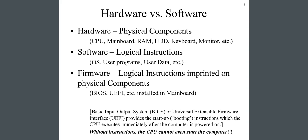Hardware versus software: hardware refers to physical components like CPU, mainboard, RAM, hard disk (HDD), keyboard, monitor, etc. Software refers to logical instructions like the OS, user programs, user data, etc. Another category is firmware — logical instructions imprinted on physical components, such as BIOS and UEFI, installed in the mainboard or motherboard.